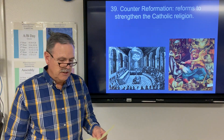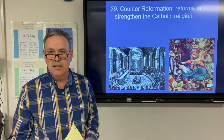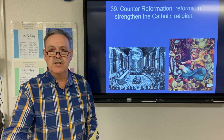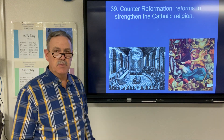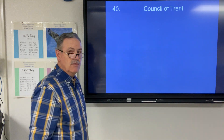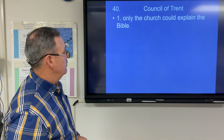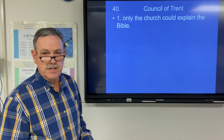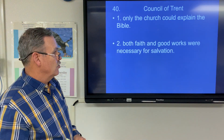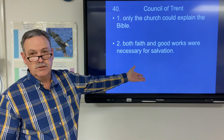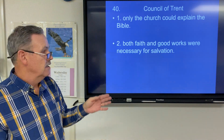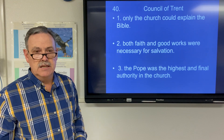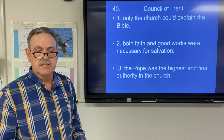The Counter-Reformation was a series of reforms to strengthen the Catholic religion. The Church felt like they were losing people to other religions starting to attract followers, and they needed to step in to halt people from leaving and try to get some back. They formed the Council of Trent, which produced three things: first, only the Church could explain the Bible — only an authorized person could interpret its verses. Second, both faith and good works were necessary for salvation. Third, the Pope was the highest and final authority in the Church.